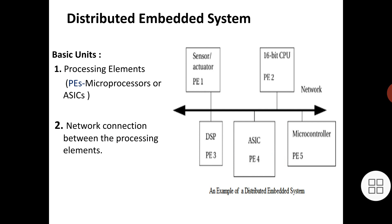This is a detailed diagram of a distributed embedded system. The basic units are processing elements, which may be microprocessors or ASICs (application-specific integrated circuits). The second basic unit is the network connection between these PEs — PE1, PE2, PE3, PE4, and PE5. In a distributed embedded system, PEs do not share a common memory. A PE may be an instruction set processor such as a DSP, CPU, or microcontroller, as well as a non-programmable unit such as an ASIC used to implement PE4, or an I/O device such as a sensor or actuator.